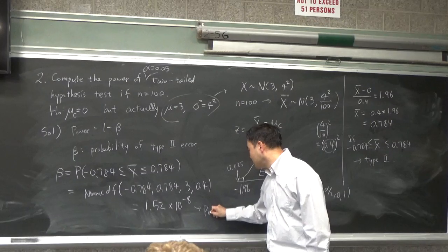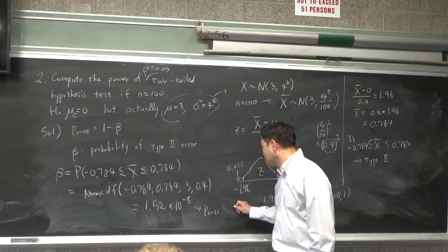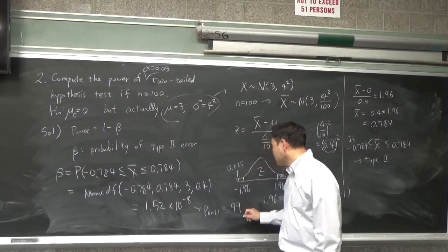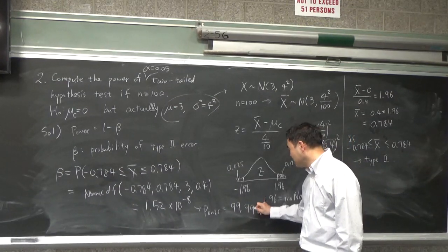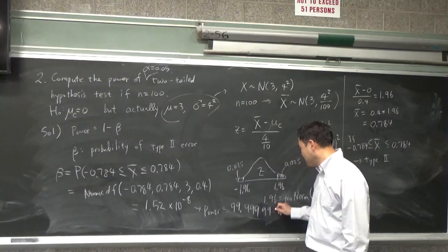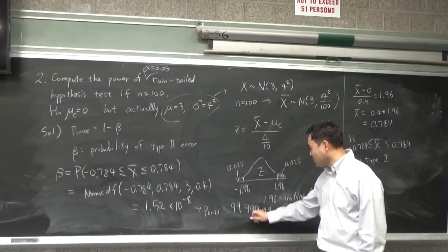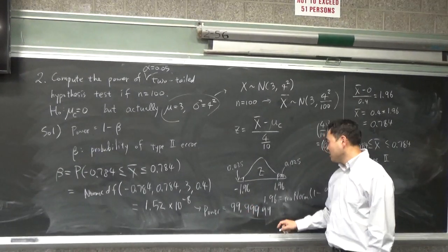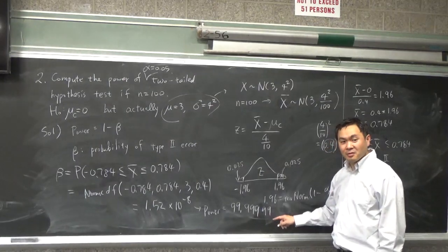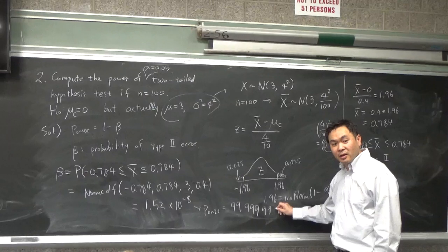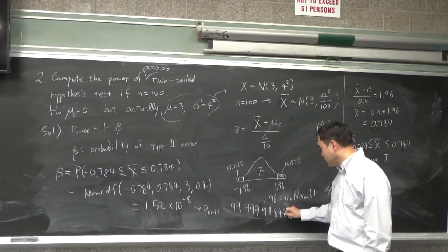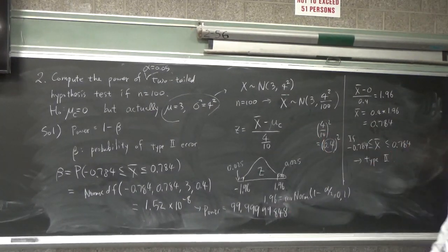What's your power? 0.9999? Yeah, and then 848 at the end. How many nines after this? 5. 5 and then? 848. 848. So that's what it is.